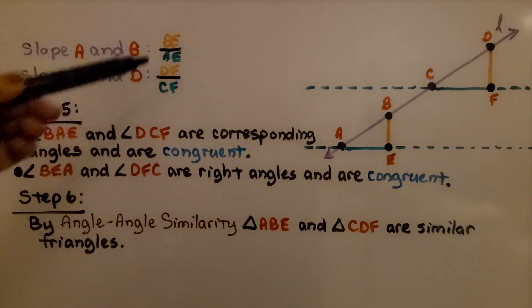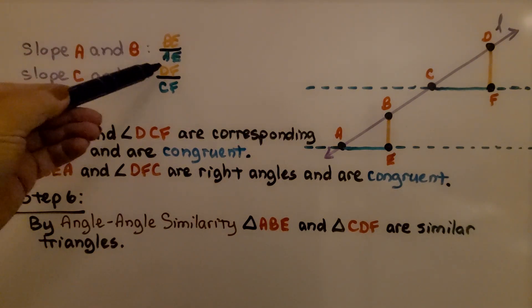I'm going to put a link to video 11.1a in the description of this video. So we have our slope A and B as BE over AE, and slope CD as DF over CF.